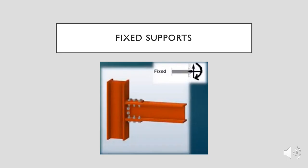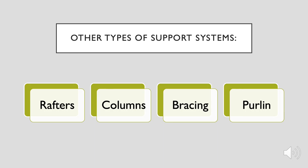Fixed supports compel a member to form a rigid connection in all directions, including rotational movement. A fixed connection does not offer flexibility inside a structure, so it is not always necessary to choose a fixed support as it may not meet the structure's needs. Other types of support systems in construction consist of rafters, columns, bracing, and purlins.